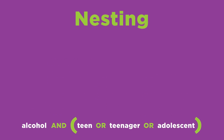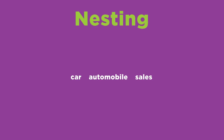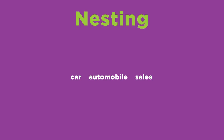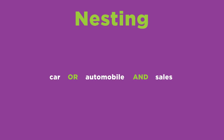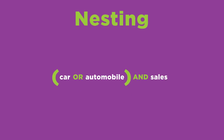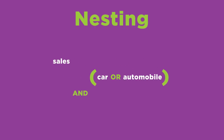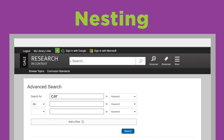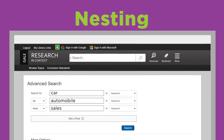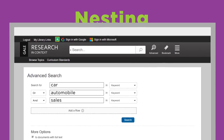Now it's your turn. How would you nest these terms to indicate that you want to find articles that include the word car or automobile, but all articles must also include the term sales? Let's start by adding some operators. Now let's add the parentheses to nest car or automobile. This order would work too. Sometimes you'll need to use advanced search options to apply this strategy. We encourage you to experiment with nesting to see how it affects your search results.